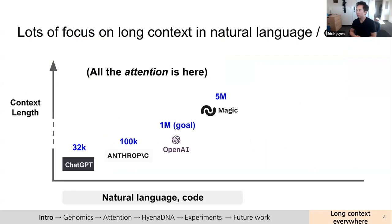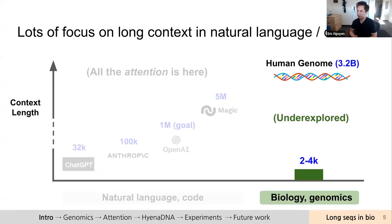One of the things we observed when we started working in this space was that there's been a lot of focus on long context models — the idea that there's a limit on how much input you can feed into large language models. Many use cases have been applied toward natural language or code. We also noticed that there wasn't much attention being paid to long context models for biology, which has some of the longest sequences out there. The human genome has 3.2 billion base pairs, but models typically used in this domain are on the order of 2,000 to 4,000 context length — a huge mismatch.